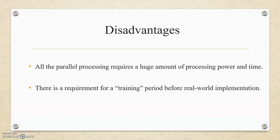The disadvantages of artificial neural network are all the parallel processing requires a huge amount of processing power and time. There is a requirement for training period before the real world implementation.